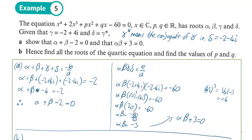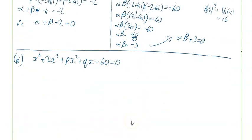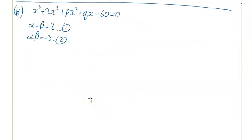We've shown both results. The next part says: hence find all the roots of the quartic equation and find the values of P and Q. We have equation 1: alpha plus beta equals 2, and equation 2: alpha beta equals minus 3. We're going to solve these two equations. From equation 1, beta equals 2 minus alpha, and we substitute into equation 2.